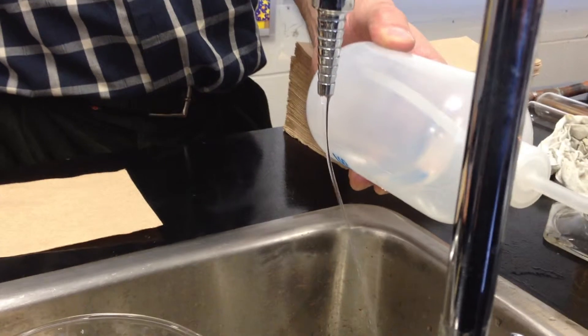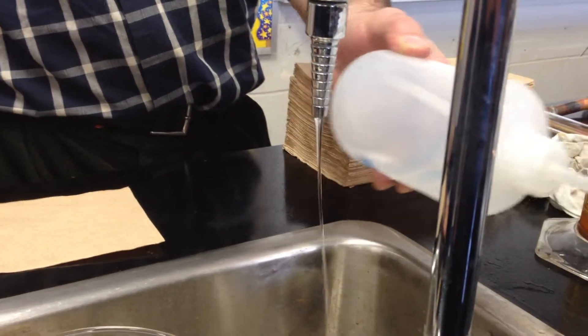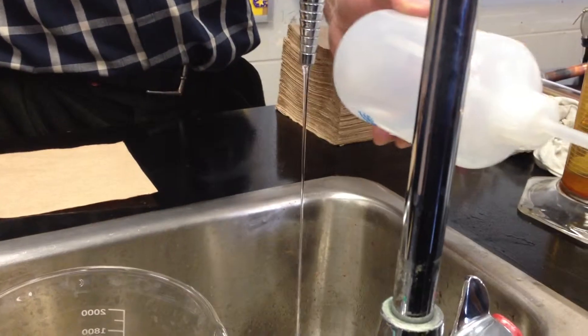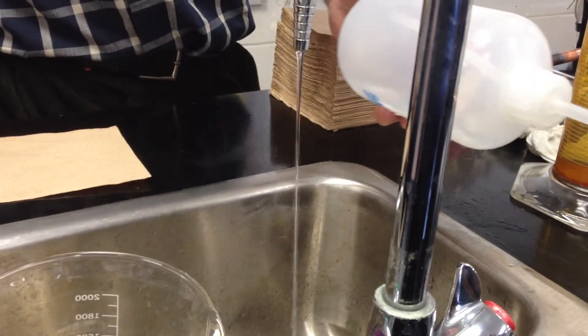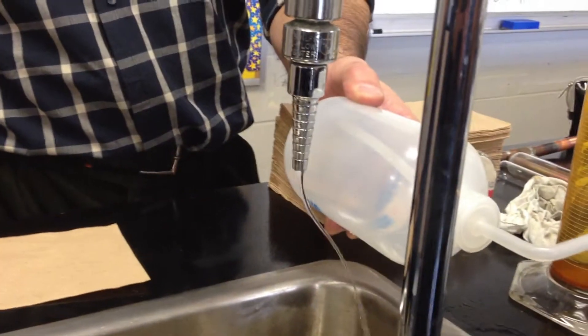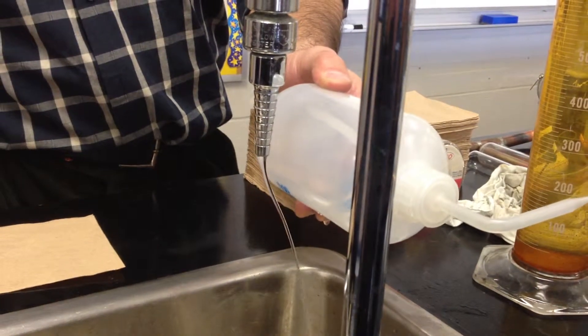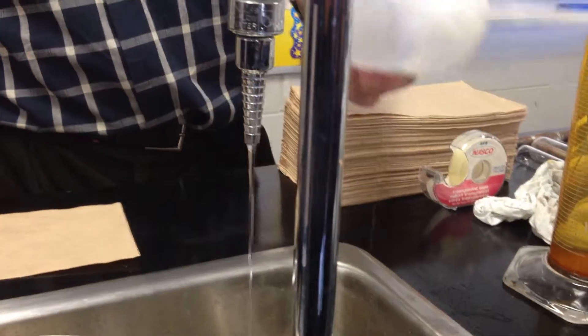So when you halve the distance, you quadruple the attraction. You see that the closer you get, the effect gets much more pronounced. It's really pulling that stream of water away from the vertical.